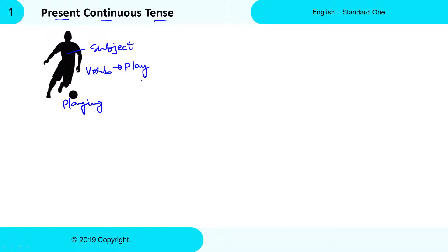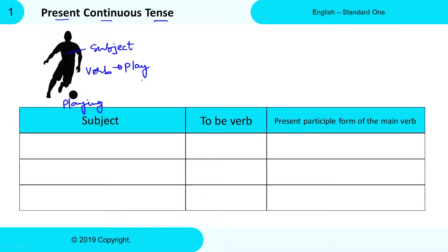For Present Continuous Tense, we also need to add a to-be Verb after the Subject. Refer the table below. For Present Continuous Tense, we need to first write Subject, then write the to-be Verb, and later add the Present Participle Form of the Main Verb. The simple rule is that if you add -ing to a Verb, it becomes the Present Participle Form of that Verb. There are a few exceptions, but we will not talk about those right now.